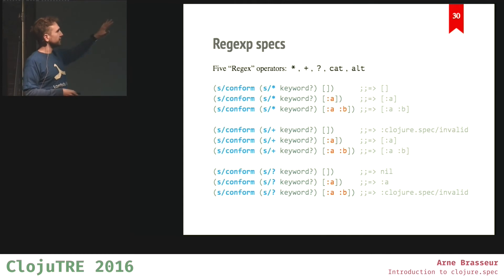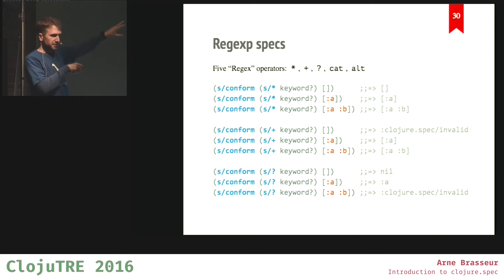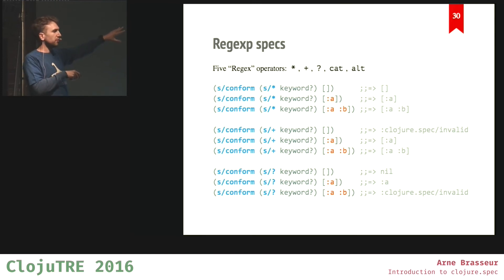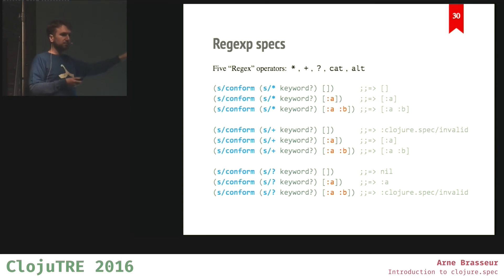You have five regular expression operators that you can mix and match. s/*, s/+, and s/? are the same as in string regular expressions. s/* keyword means zero or more keywords — so vectors with zero, one, or two keyword elements are all valid. s/+ requires at least one, so an empty vector is invalid. s/? means at most one, so a two-element vector is invalid.